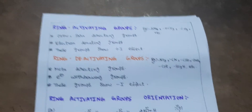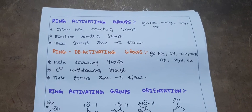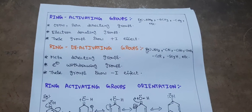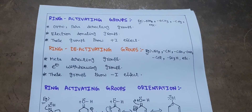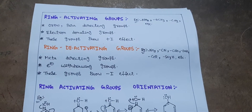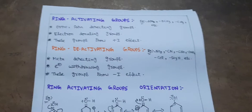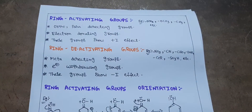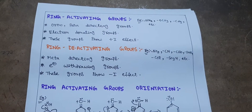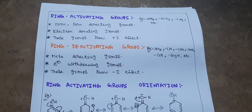Welcome to my channel Sushruta. Today our topic is orientation of ring activating and deactivating groups. In the previous video we studied what ring activating and ring deactivating groups are and how to differentiate and identify them. In this video we are seeing their orientation — orientation of ring activating groups, orientation of ring deactivating groups, and even halogens. I'm mentioning halogens separately because there is a special reason — watch this video until the end.